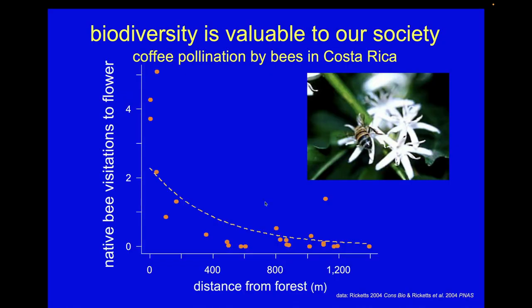Another way to look at this is with coffee data from a colleague who did his PhD in Costa Rica. He was looking at coffee plantations and how far those plantations are from intact forest. When farms are really close to intact forest there are tons of bee visitation, but as you go farther away there's a declining efficiency, so that by about a kilometer away there's very low bee pollination. That all speaks to the value of bees as just one example of how diversity manifests in terms of something like drinking coffee or eating watermelon.